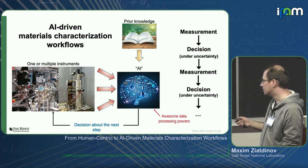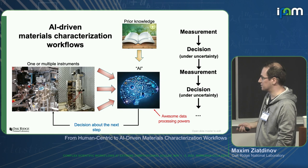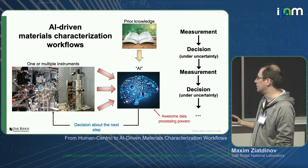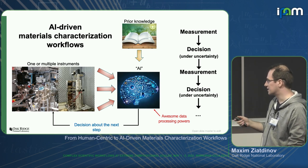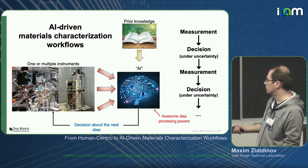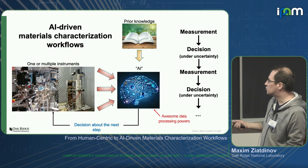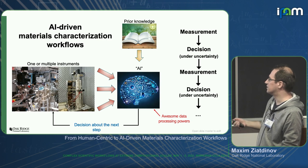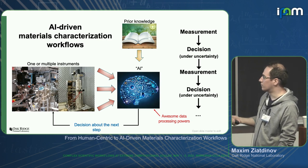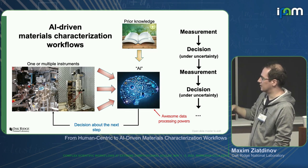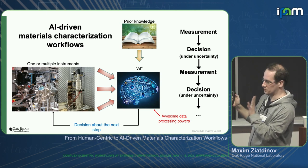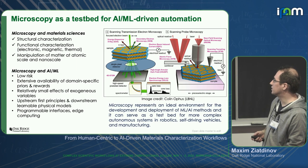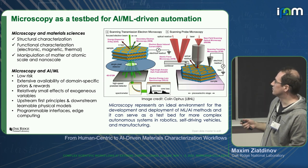Why do we want to do this at all? Because AI has awesome data processing powers. In human-driven workflows, analysis rarely happens in real time — it can take days or weeks to properly analyze data and decide what to do next, by which time the experiment is long over. So the goal is to use AI's data processing power to make decisions about next steps in real time. I'm not saying the goal is to completely take humans out of the loop, but this is something we've explored: can we replace human judgment with AI? I'll focus today on microscopy, which is a pretty cool technique that can serve as a testbed for AI/ML-driven automation — specifically scanning transmission electron and scanning probe microscopy. These tools allow both structural and functional characterization: measuring positions of individual atoms, studying electronic, magnetic, and thermal properties, as well as performing atomic manipulation at the nanoscale.